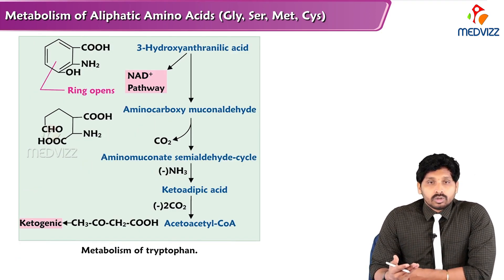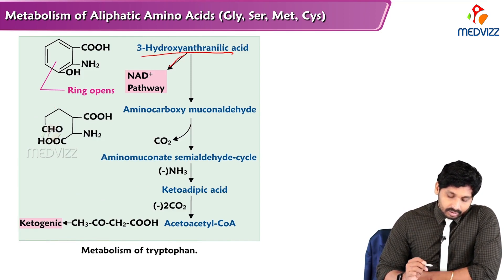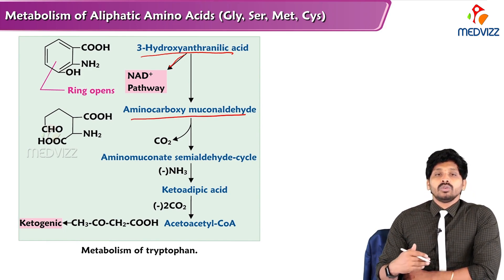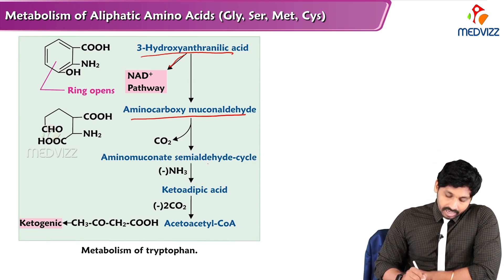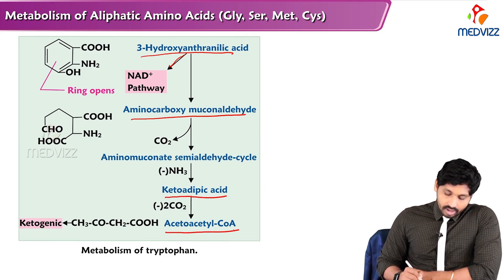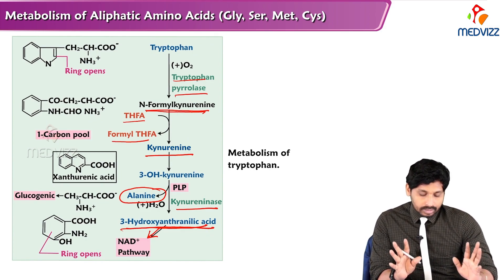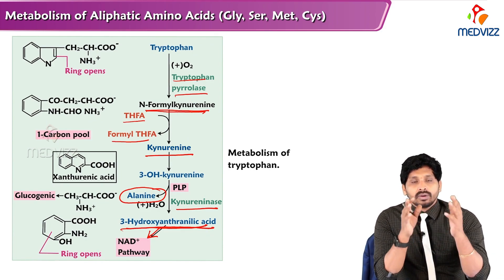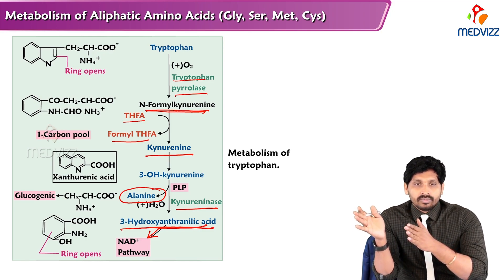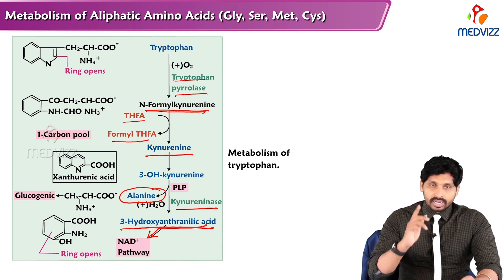3-Hydroxyanthranilic acid is converted via the NADP+ pathway into aminocarboxymuconate semialdehyde by removing carbon dioxide. This is then converted to aminomuconate semialdehyde, and by removing the amino group it becomes ketoadipic acid. Ketoadipic acid is converted to succinyl-CoA, entering the ketogenic pathway. So two main substances — kynurenine pathway leads to 3-hydroxyanthranilic acid going to succinyl-CoA, and also to NAD+ formation.